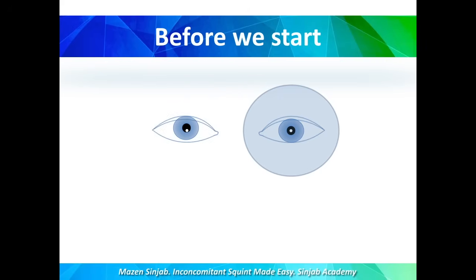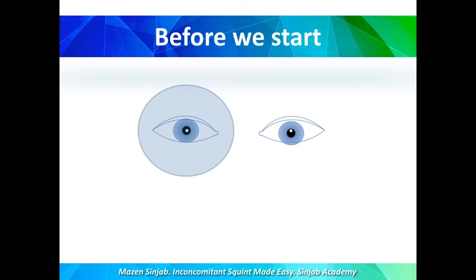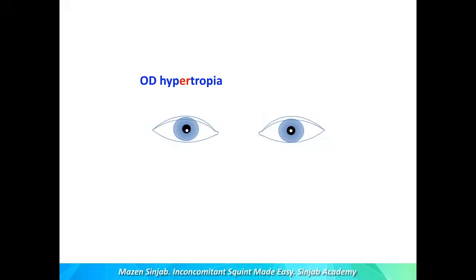This is the movement again. When the right eye moves down, this means there is hypertropia in the right eye. When the left eye moves up, this means there is hypertropia in the left eye, but this case will be referred to as right eye hypertropia — we do not refer to it as left eye hypertropia. Case number one: a patient came with right eye hypertropia, meaning he has left eye hypotropia.